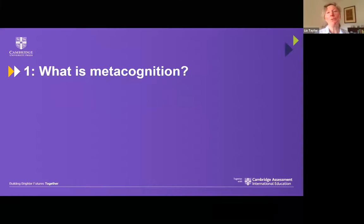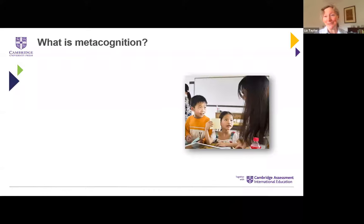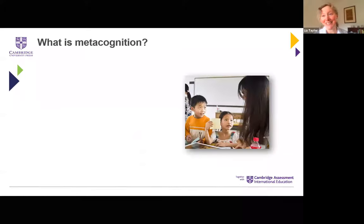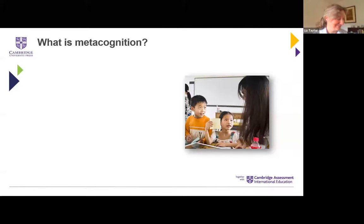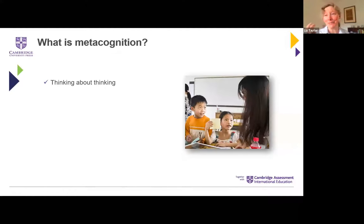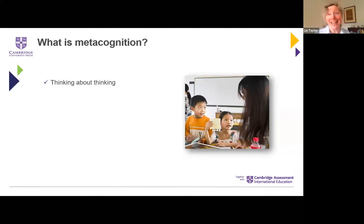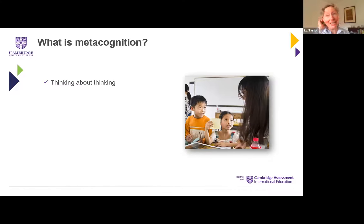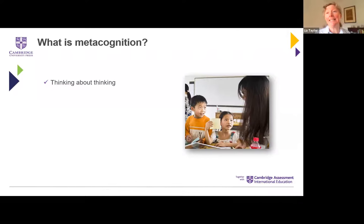So just to get started — what do we actually mean by metacognition? I suspect many of you would say 'thinking about thinking,' which tends to be the sort of immediate response. And it's okay as a start. Cognition is thinking — all that mental activity going on in our heads. And 'meta' in this context means 'about,' so it's thinking about thinking, or if you like, learning about learning. That's helpful as an initial definition.